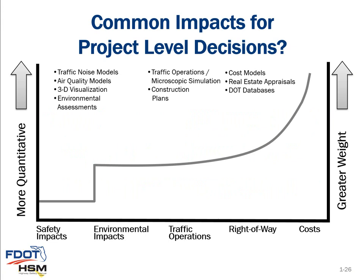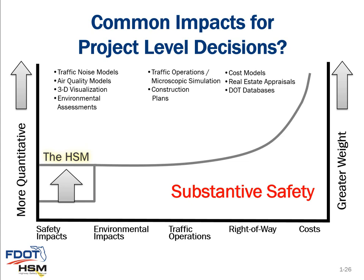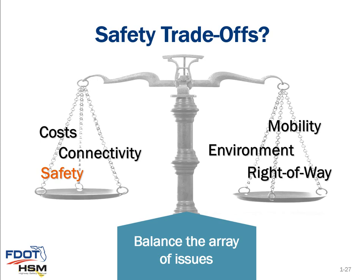As we've looked at different types of analysis and project-level decisions over the years, we've been able to get into great detail on things like traffic noise modeling, micro-simulation, macroscopic traffic operations analysis, environmental assessments, and detailed cost analysis. We have not been able to do the same with more quantitative safety assessment. Now with the Highway Safety Manual, we have the ability to do quantitative assessment — known as substantive safety — which allows us to equally consider safety alongside cost, environment, and mobility when evaluating project trade-offs.